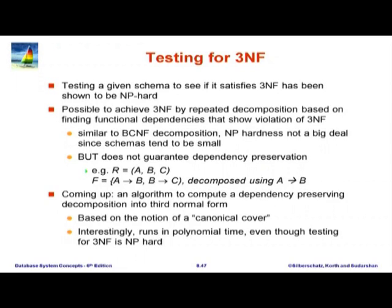I want to spend a few minutes on testing for 3NF. Given a particular schema, checking if it is in 3NF is actually quite hard — it is shown to be NP-hard. For that matter, checking if it is in BCNF is also hard and expensive. If you have done a decomposition, checking if that decomposition is in BCNF is also hard.